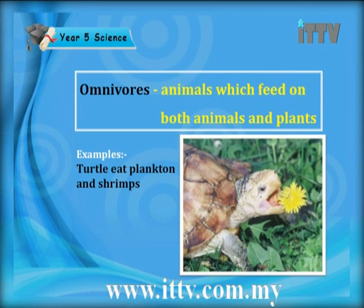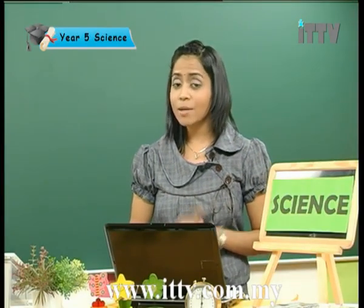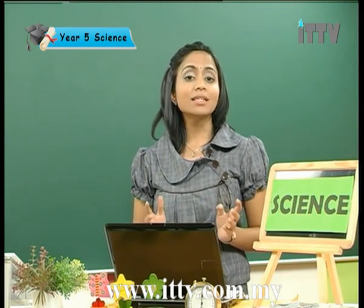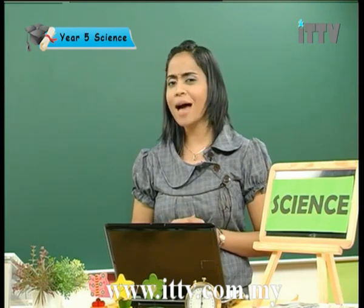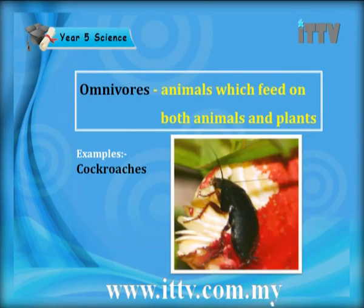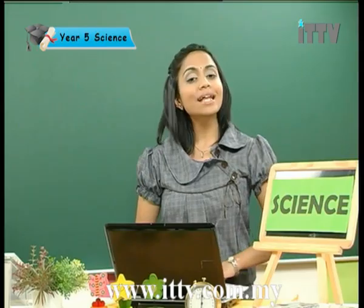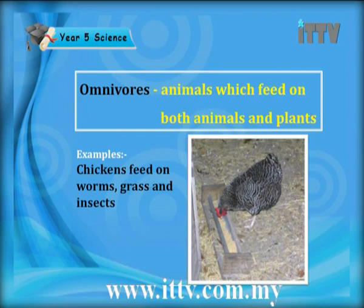For example, the turtle eats plankton and shrimps. Next we have the bears — bears eat honey, fruits and fish. How do bears protect themselves when they eat honey? Because the bees are going to sting them. This is achieved by having thick fur. The dirty cockroaches you find around your house are also omnivores. Birds are also a type of omnivore because they eat seeds and insects. Chickens feed on worms, grass and insects, so chickens are also a type of omnivore.